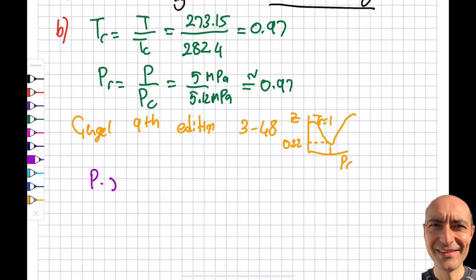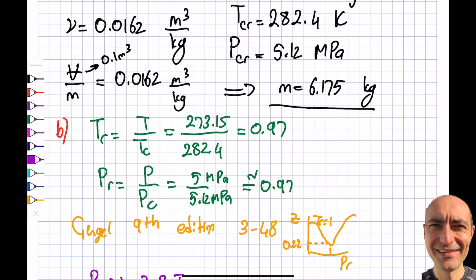Then I go ahead and do P times v equals Z times R times T. You can imagine this looking quite similar to what I did before, except now I'm multiplying the right-hand side by 0.22.